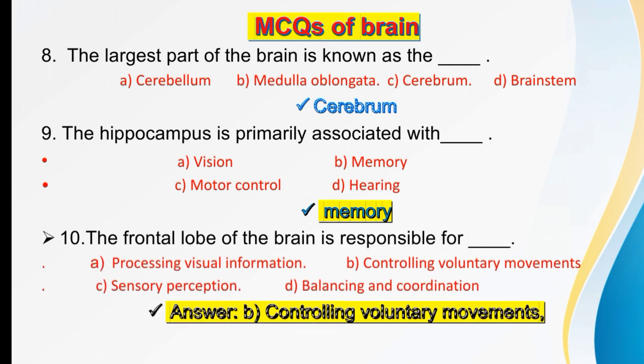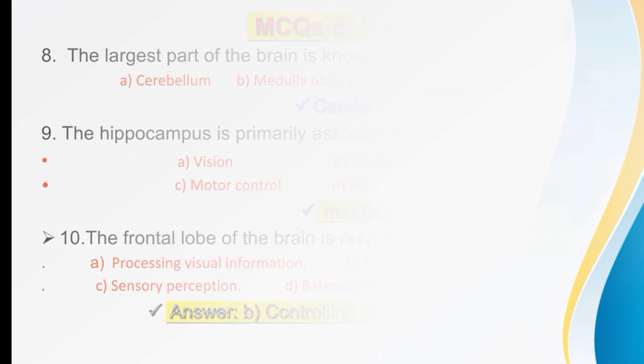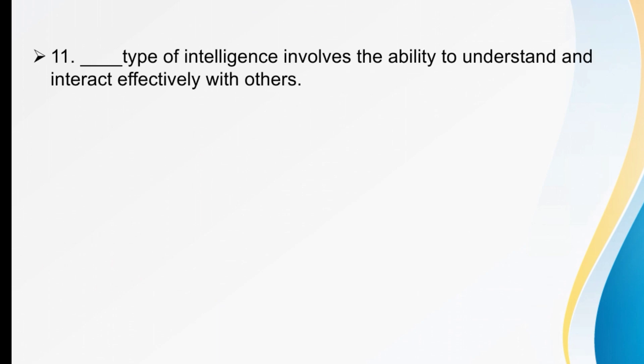The frontal lobe of the brain is responsible for dash. Options are processing visual information, controlling voluntary movement, sensory perception, or balancing and coordination. The frontal lobe of the brain is responsible for controlling voluntary movement.